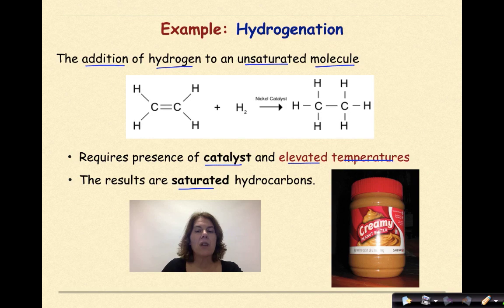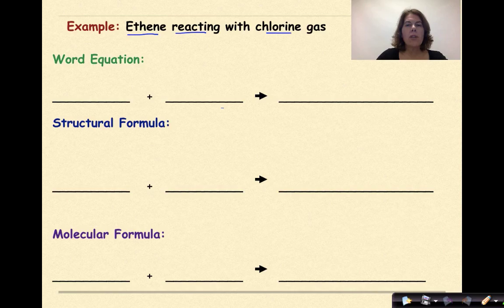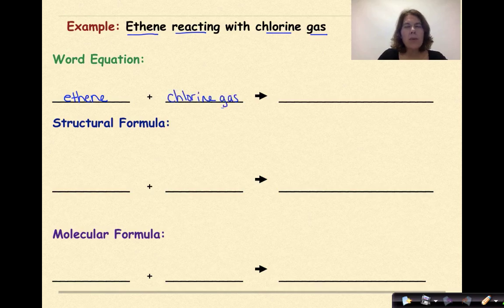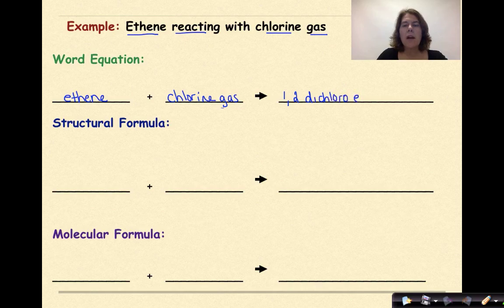Let's look at an example: ethene reacting with chlorine gas. Our word equation starts with ethene and chlorine gas. The important thing to note is that we're only going to have one product, because we're taking ethene, which has a double bond, and making it into a single bond. So each carbon is going to pick up a chlorine. This is going to be 1,2-dichloroethane.